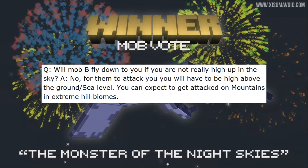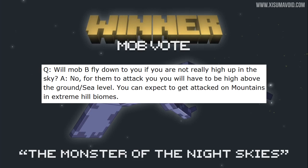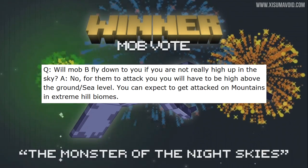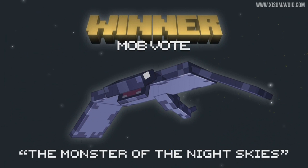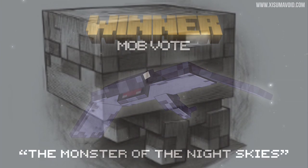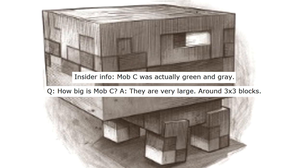This question is about mob B, the Monster of the Night Skies, asking if you'll get attacked if you're not high up in the sky. Jeb answers that you have to be above sea level and high above the ground — suggesting you'd need to be on a mountain or in an extreme hills biome to be attacked by this mob. Finally, a couple of things about mob C, which probably will never get into the game: apparently it was going to be green and grey, and it would be a large mob around the size of three by three blocks, comparable to a wither. That's something I would have really liked to have seen, but unfortunately it's not going to be added.